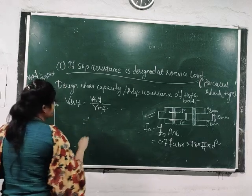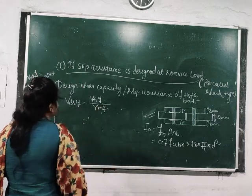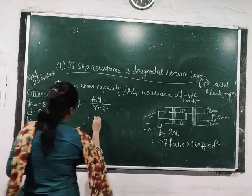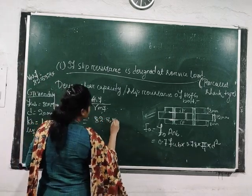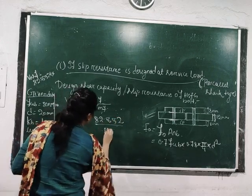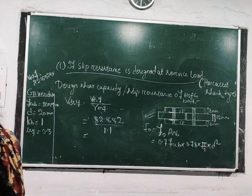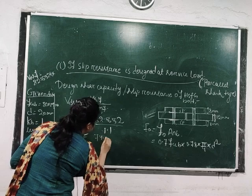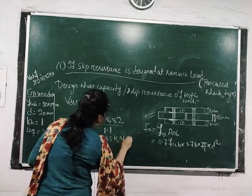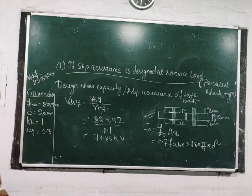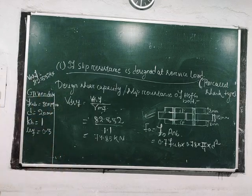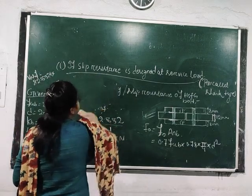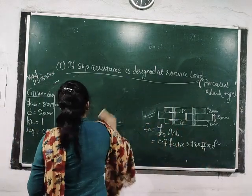The design shear capacity of the HSFG bolt = nominal shear capacity / γmf = 82.332 kN / 1.1 = 74.85 kN. This is the design shear capacity or slip resistance of the HSFG bolt when slip resistance is designed at service load.